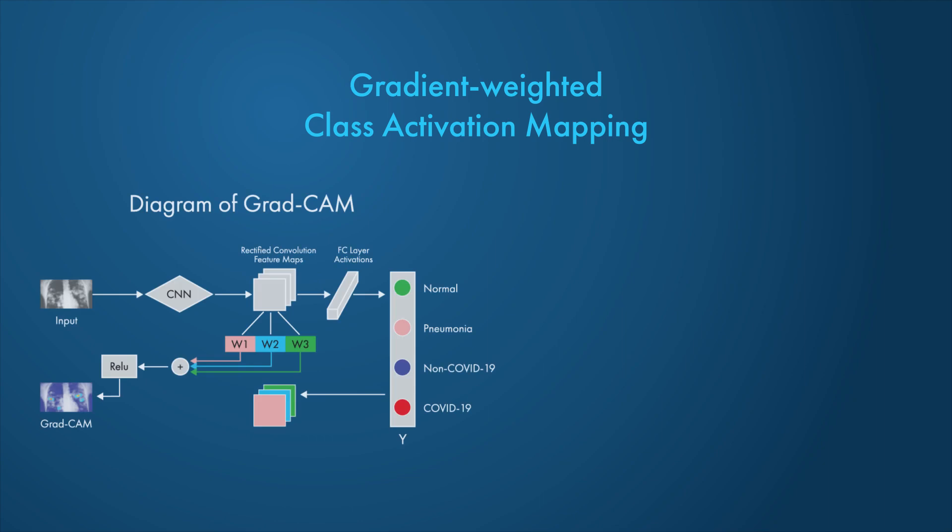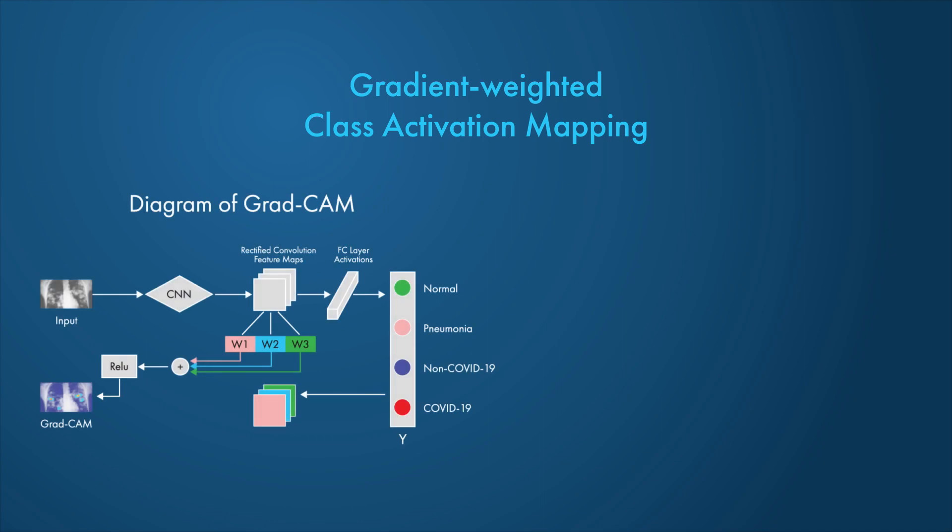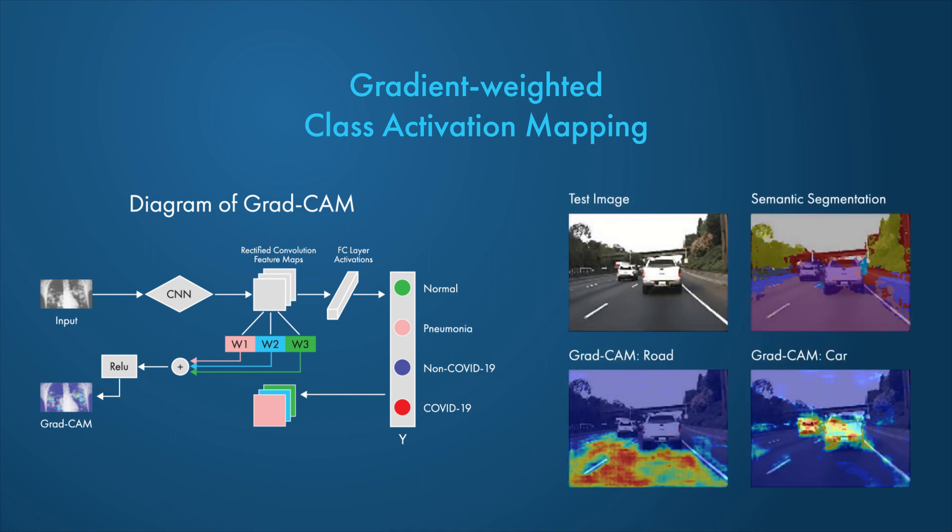GradCAM is a generalization of class activation mapping. It uses the gradients of the classification score with respect to the final convolutional feature map. The parts of the image with a large value for the GradCAM map are the most important for prediction.